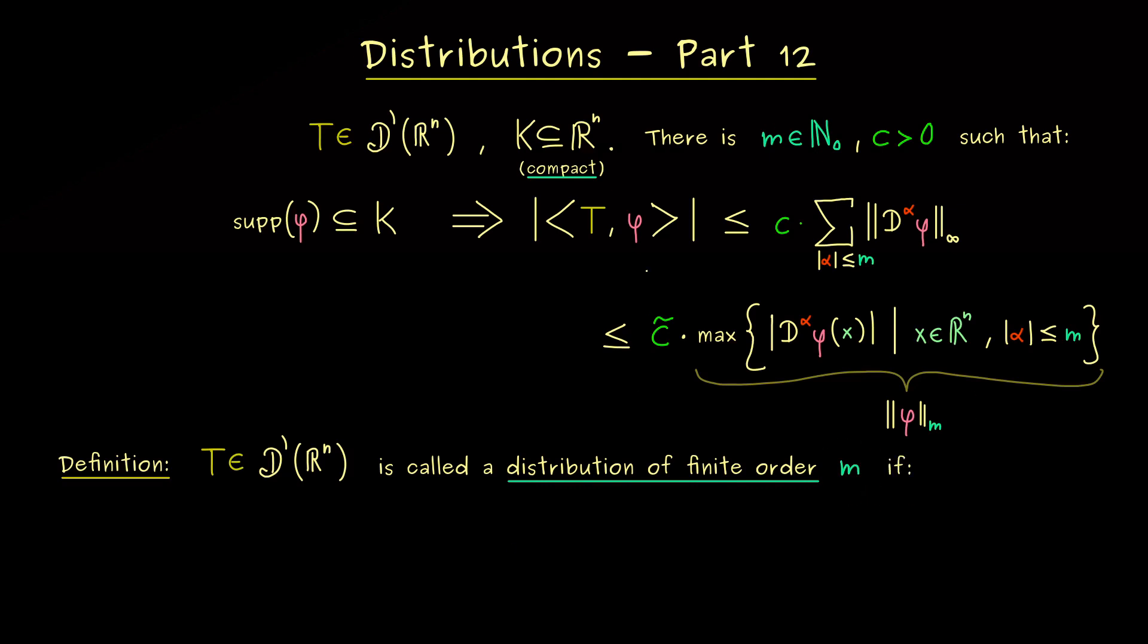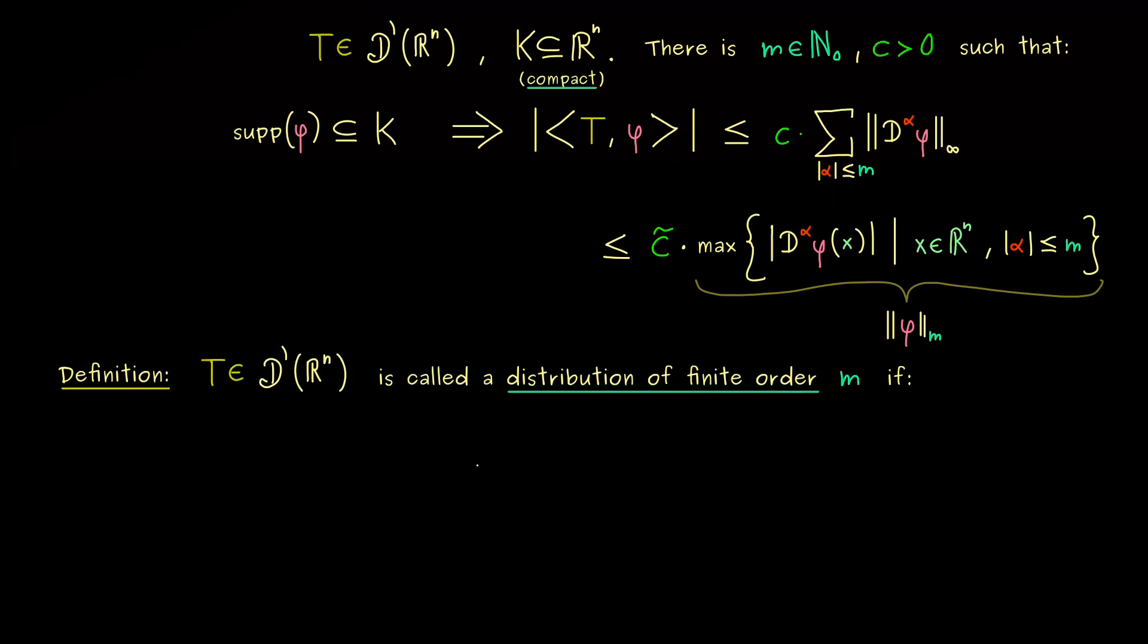And in order to get the correct idea, let's write it down with quantifiers now. So we write that there exists a non-negative integer m such that for all compact sets in ℝⁿ we find a positive constant we now call c again, such that for all test functions φ we have the estimate from before. And now we can write it in a short way: the value of the distribution T at the function φ is less or equal than c times the m-norm of φ.